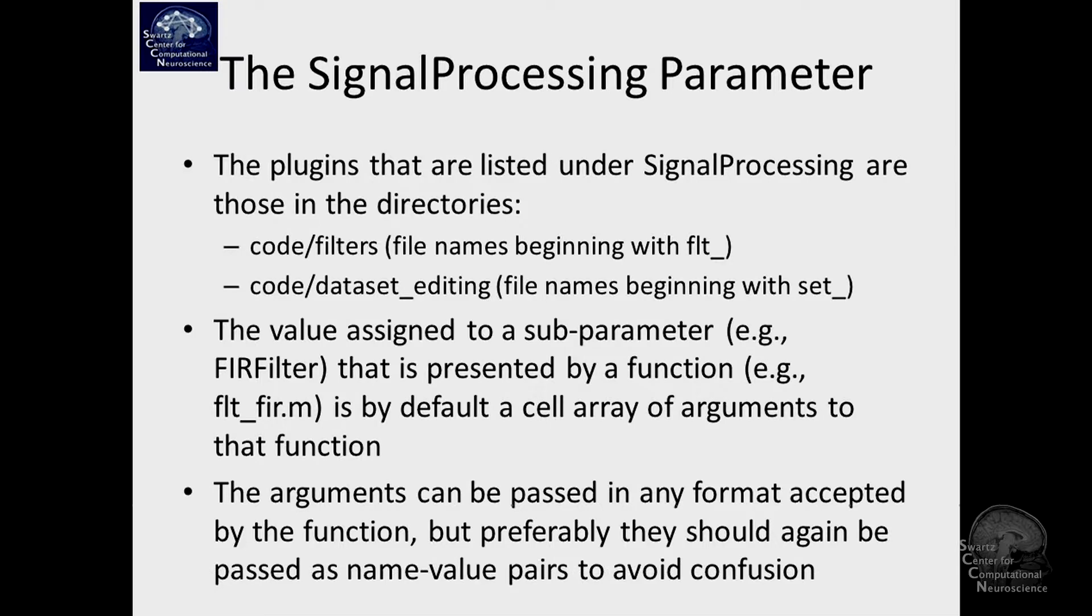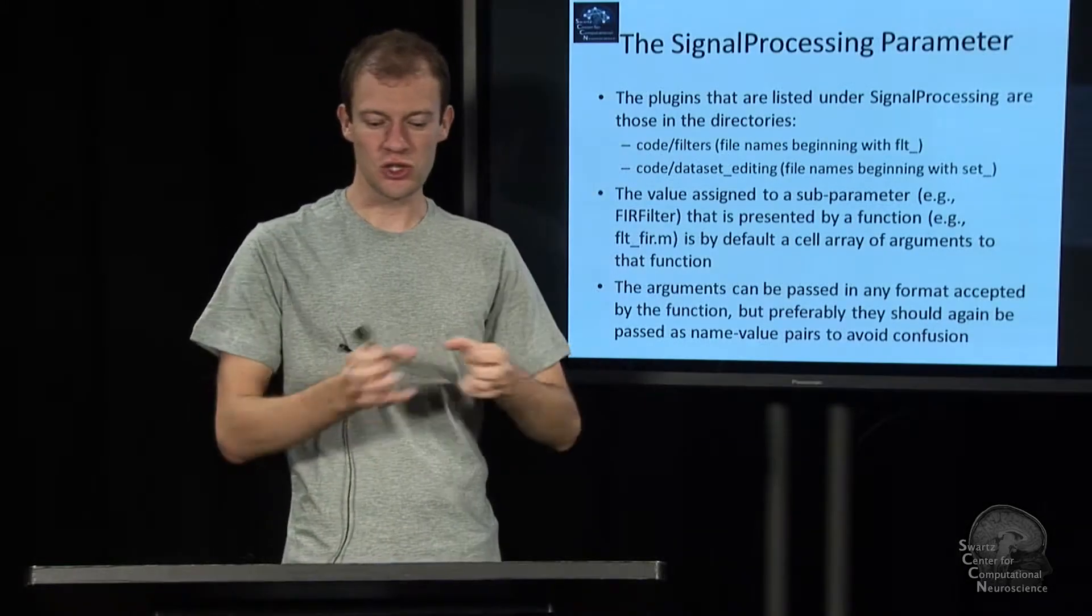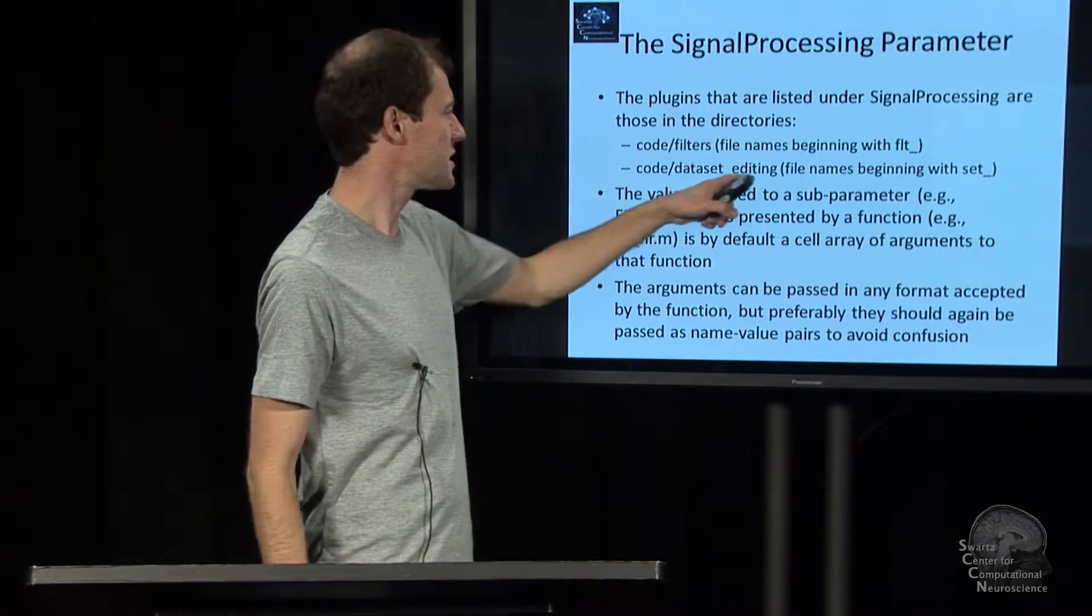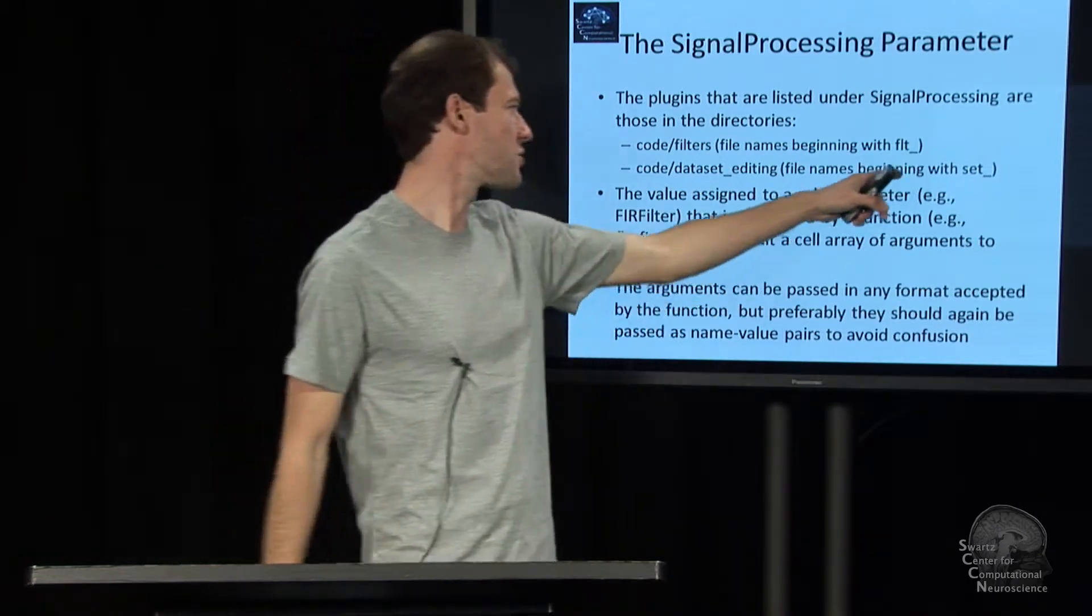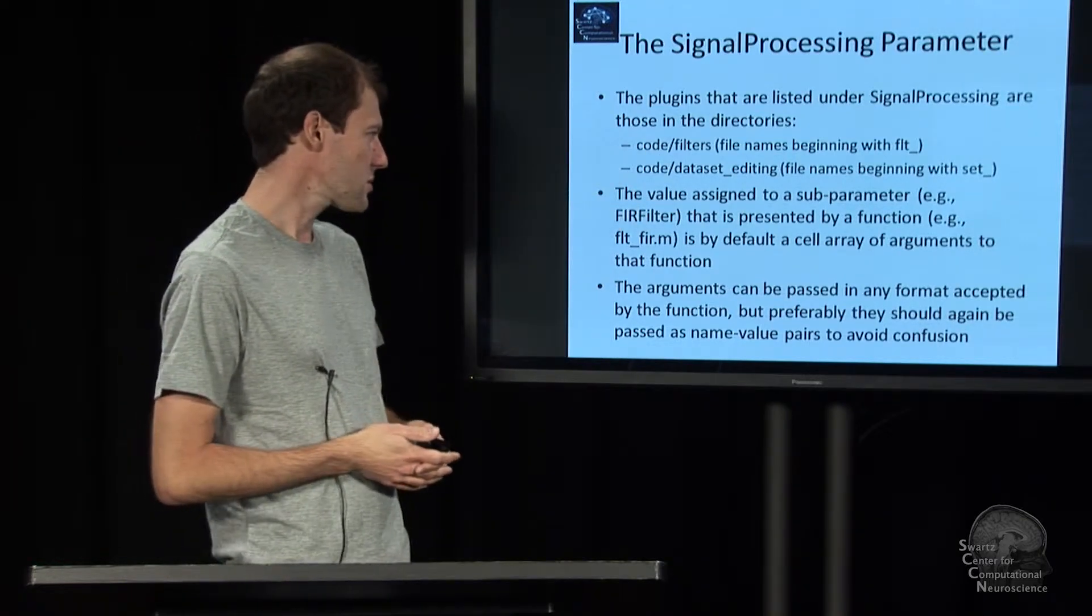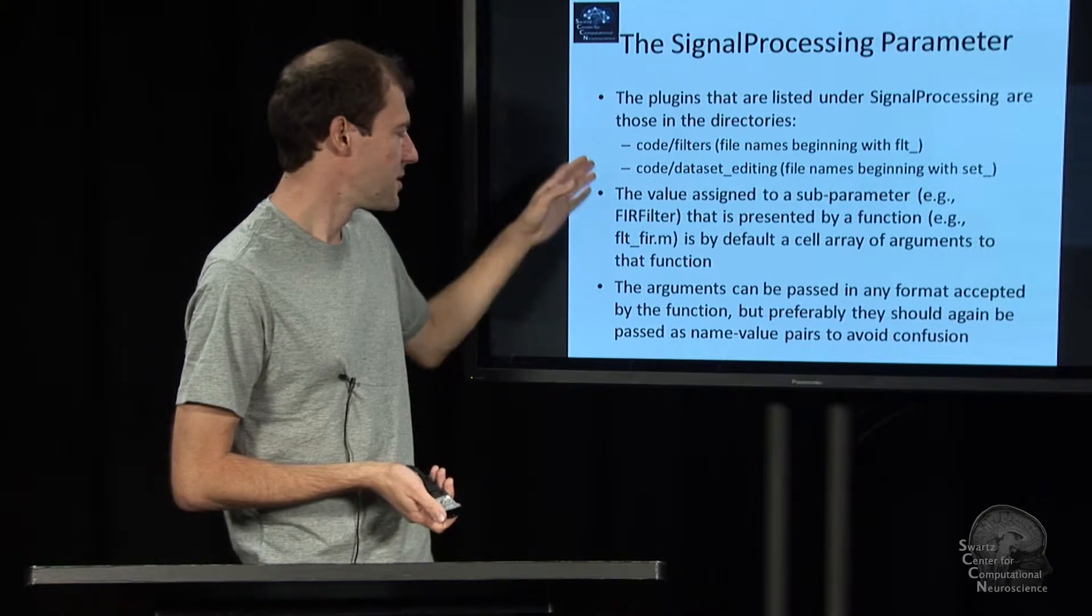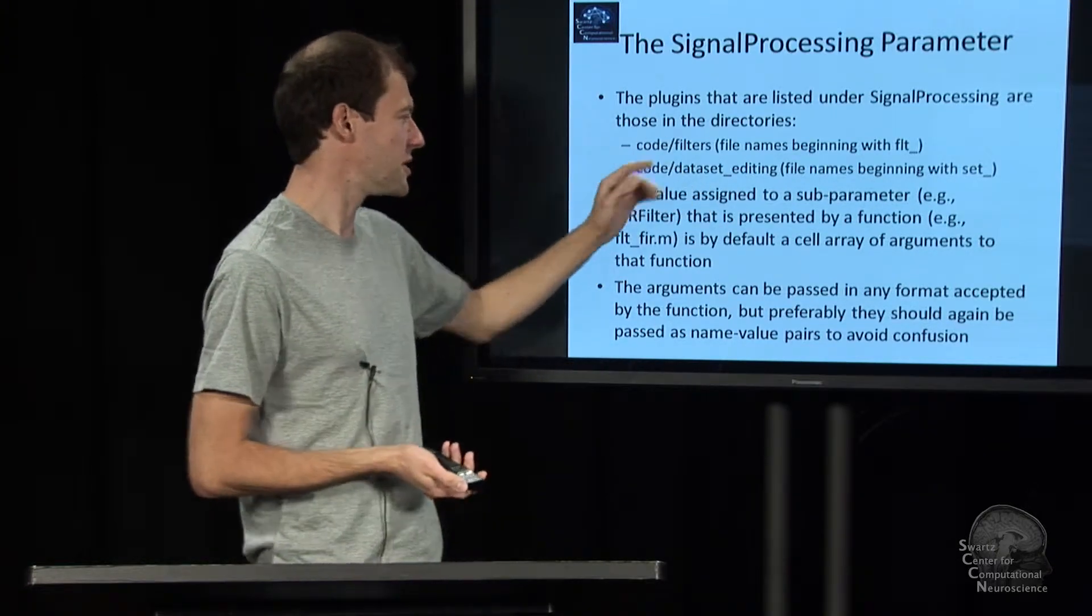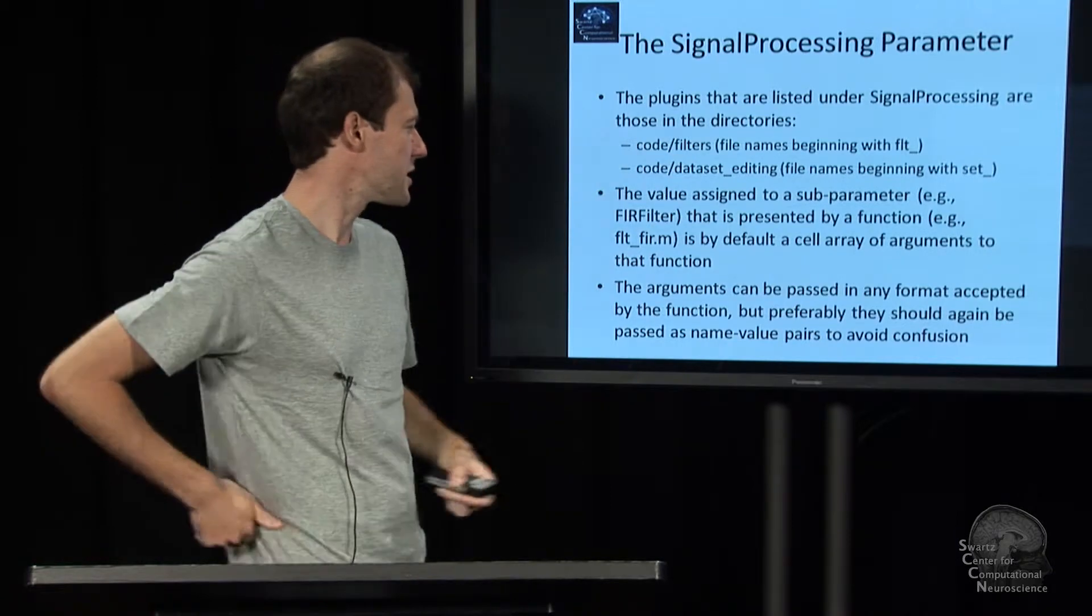There is another group of functions that process signals in some way, but they don't transform the actual data really, they just change the metadata. They change the channel order or things like that. These are called dataset editing functions, start with SET underscore, and are in the code/dataset editing folder. The signal processing parameter might include multiple combinations of some filters and some dataset editing.